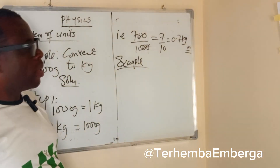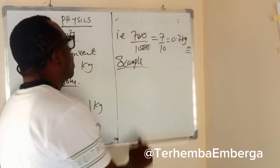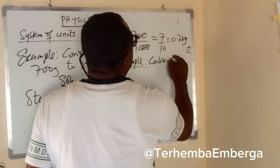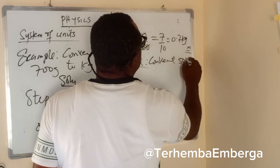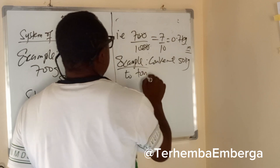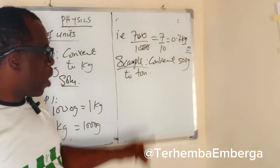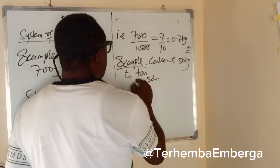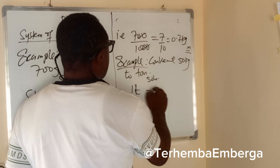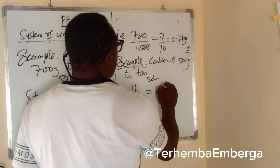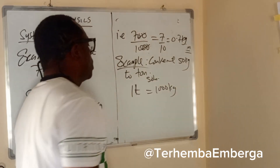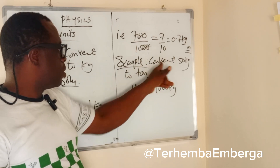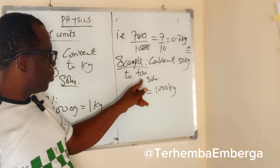This example also borders on mass. Convert 50 kg to ton. What is the relationship? One ton is equivalent to 1000 kg. We know that ton is bigger than kg, and we are converting from a small to a big unit.